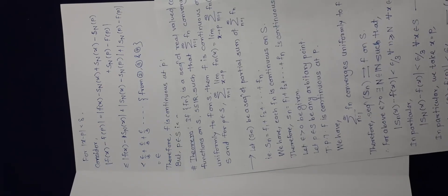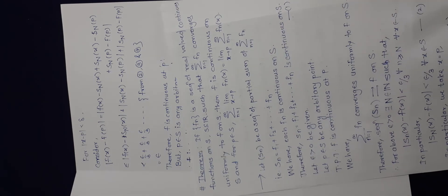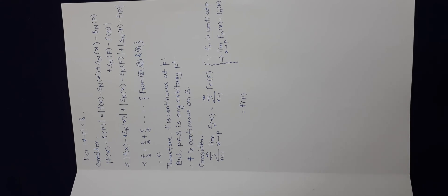Let us go to the next part. We have to prove the equality as well. Starting with the left-hand side: as fn is continuous at p, we can write summation fn of p. And since summation fn converges uniformly to f, this is nothing but f of p. We call this equation number 5.